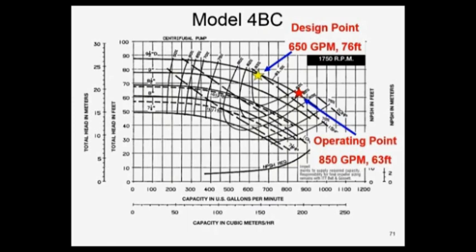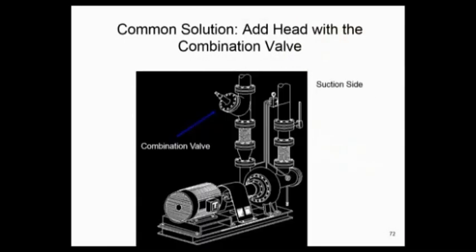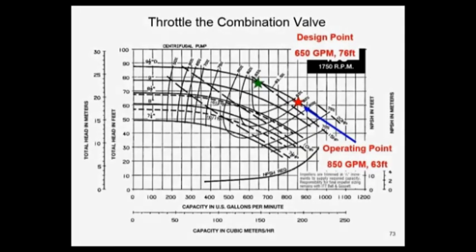How would you balance the system? What's involved? A common solution to this would be to go to that triple duty valve, a combination valve, and throttle back on it to force the head back up to 76 feet, and force it back to the required flow rate of 650 GPM. Let's see what that looks like. Red is where we're running, the green is where we want to wind up at, flow-wise. Now we could throttle the triple duty valve or throttle the balancing valve, and I've added pressure drop to the system, I've changed my system curve.